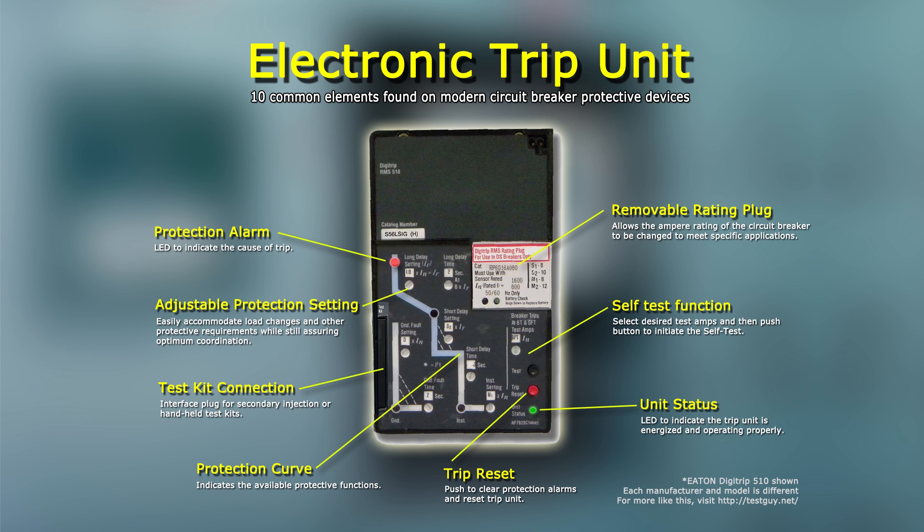Number 9: Battery Test. Following an automatic protection trip operation, the backup battery continues to supply power to the protection alarms. The trip unit battery is also responsible for supplying power to the device memory for other important information such as the current time, date, and diagnostic data.